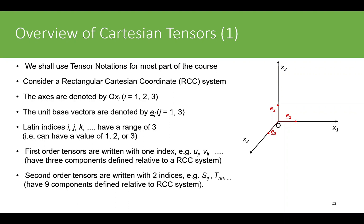Second-order tensors are written with two indices - sigma_ij, T_nm, S_ij - these are examples of second-order tensors with two indices. They will have nine components as I explained in the previous part, which are defined relative to the rectangular Cartesian coordinate system.